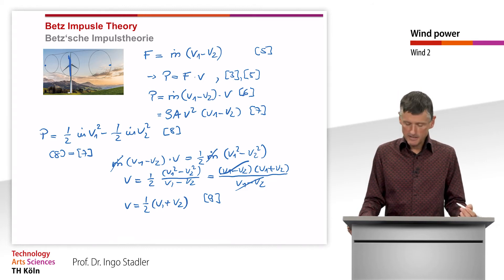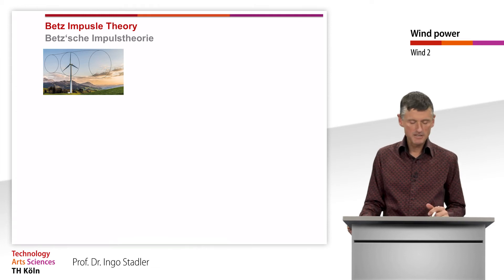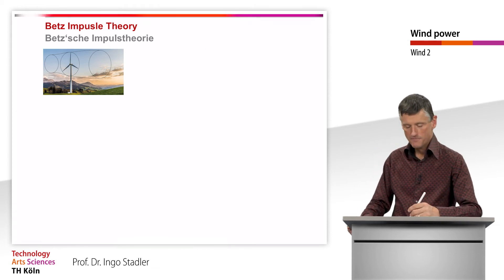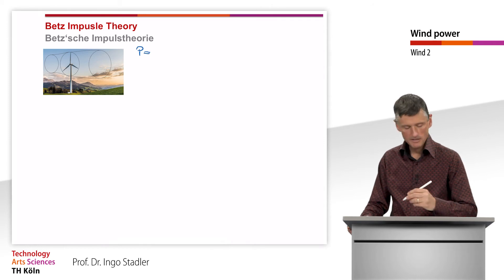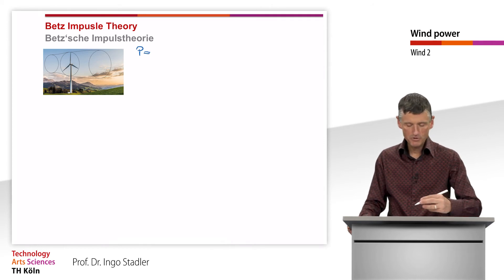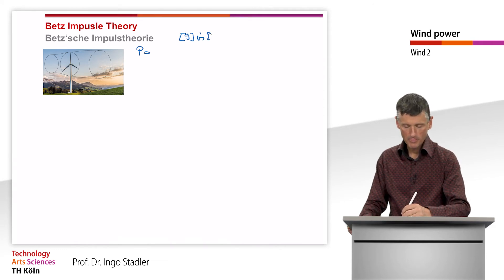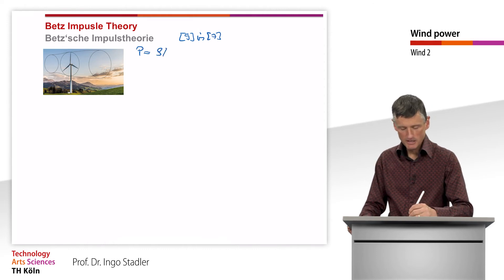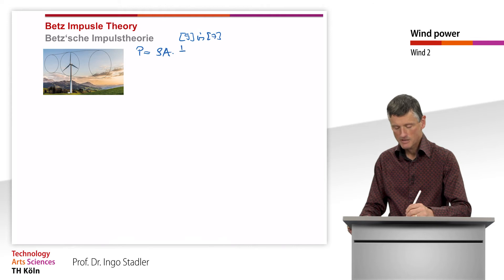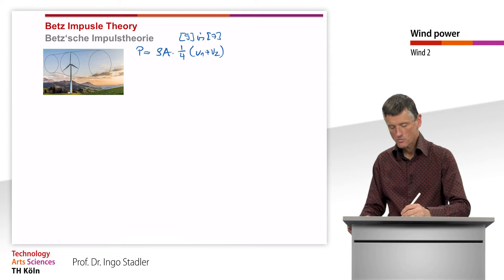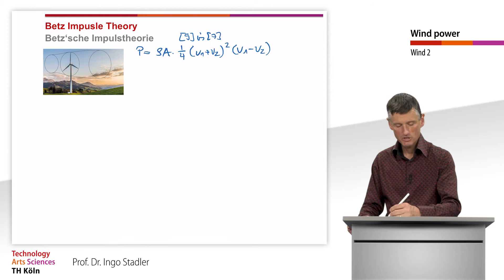Nevertheless, we use that now to express the power we are able to extract. When we put equation 9 into equation 7, we get that the power is the density times the rotor area times one fourth times (V1 plus V2) squared times (V1 minus V2). That is equation 10.